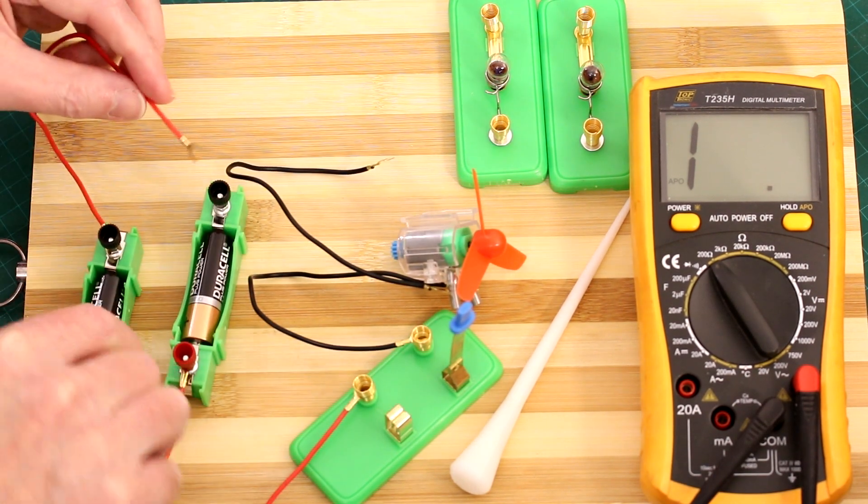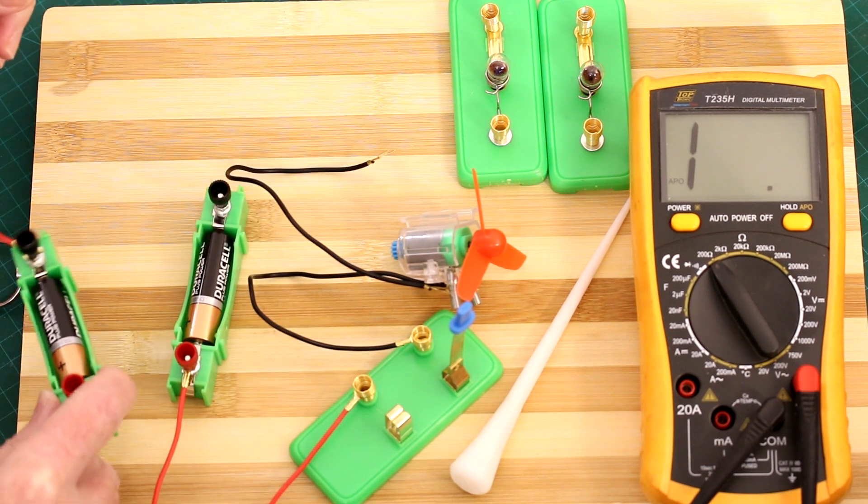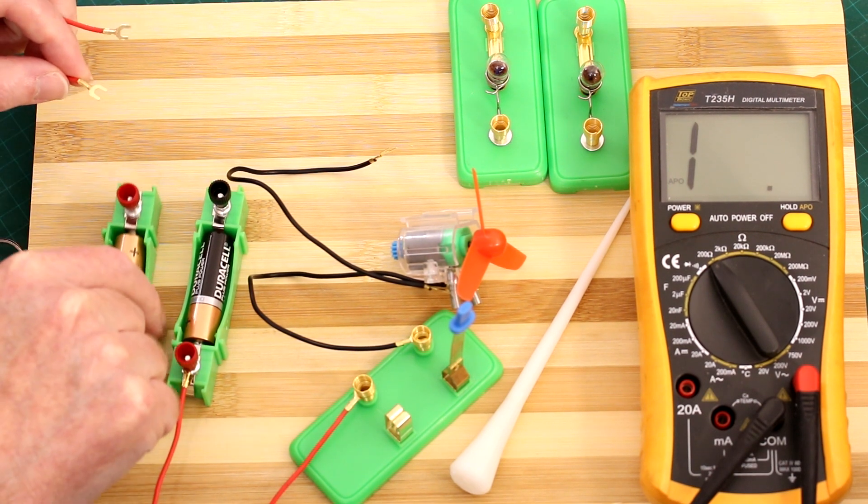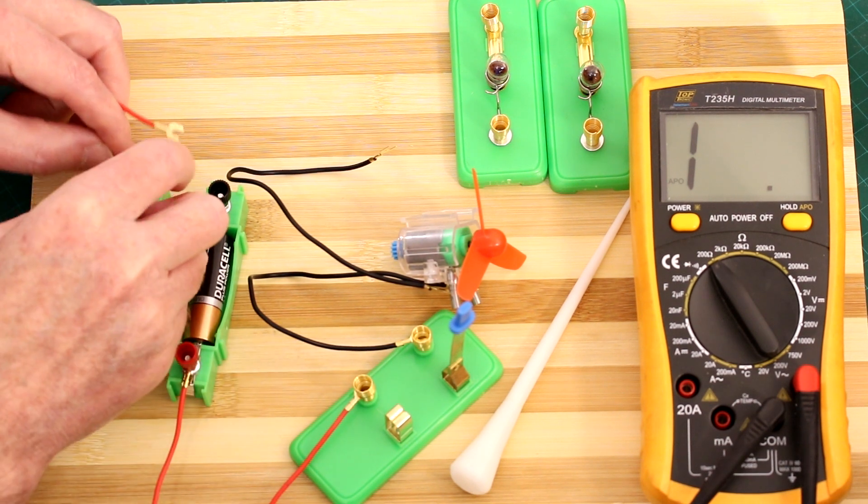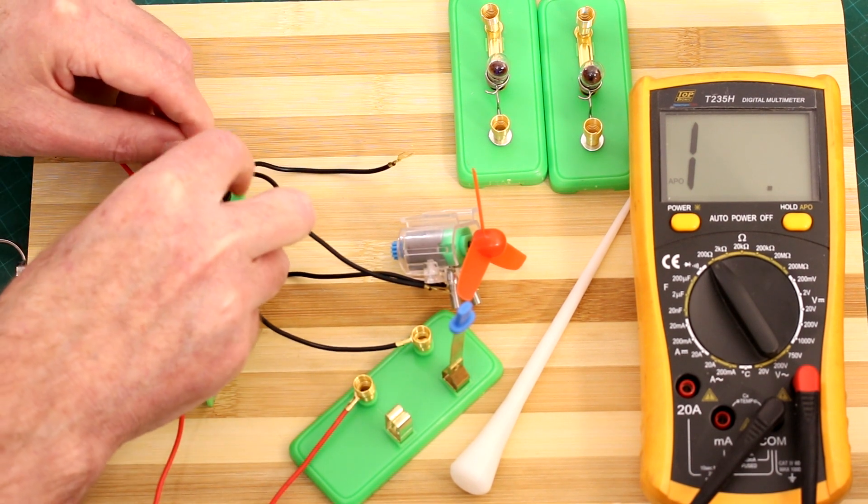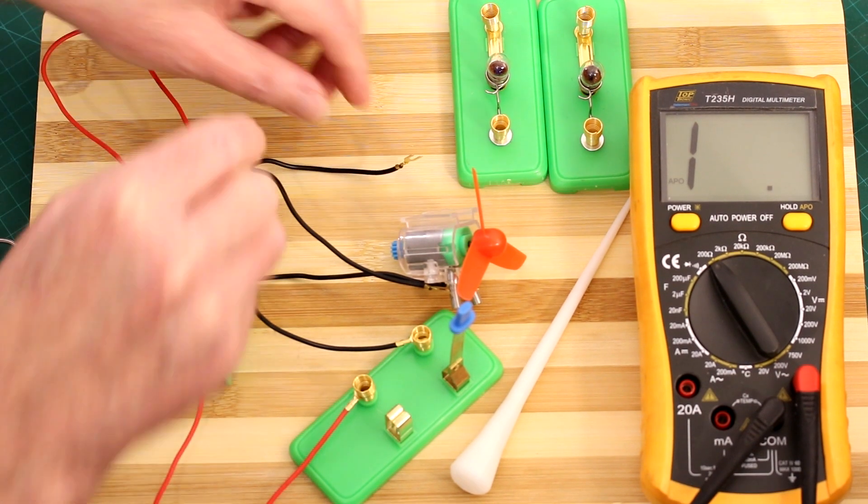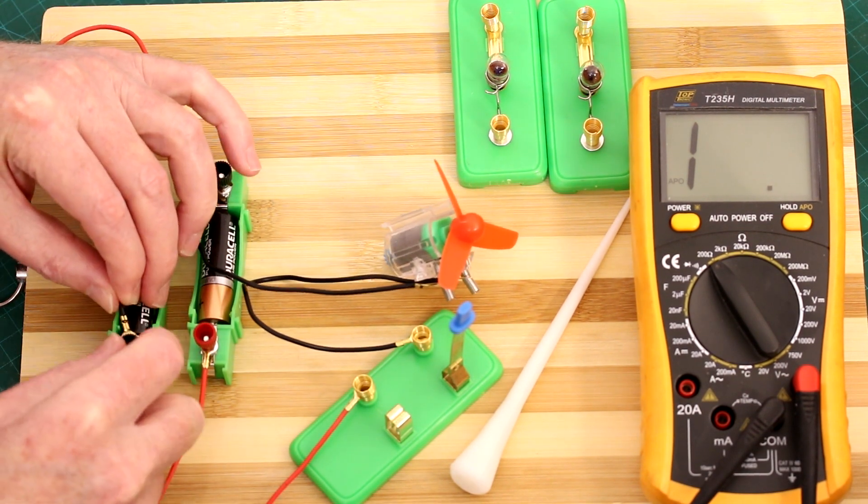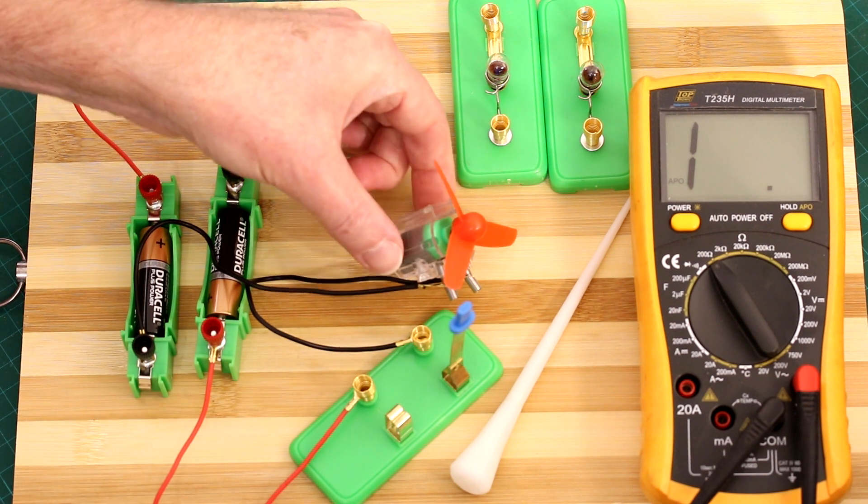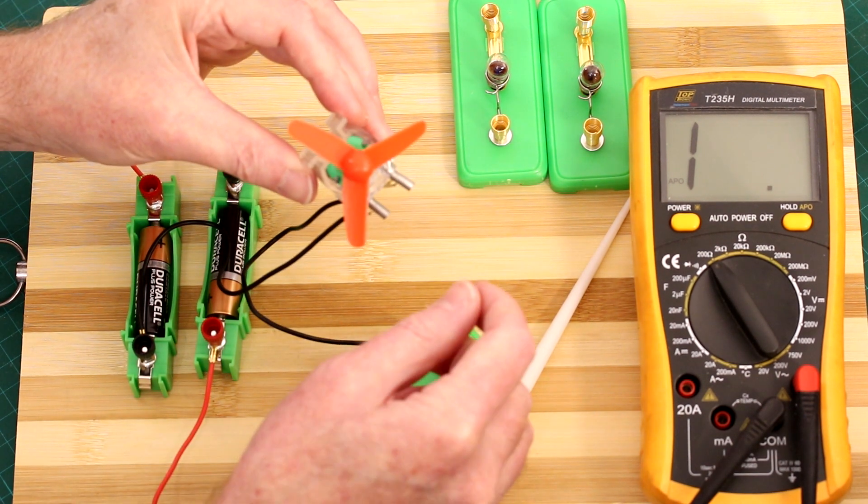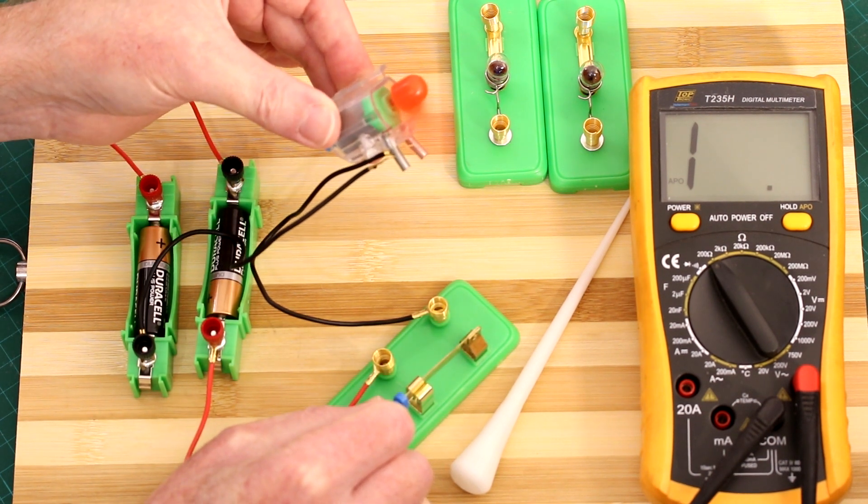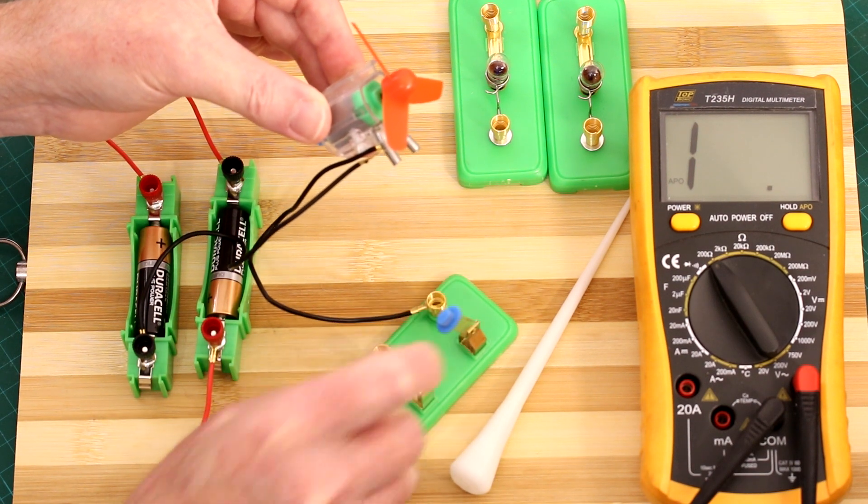Let's see if we can get that fan to spin a bit faster. Now what we want to do is check the polarity, so positive to negative, like that. I'm going to hold the fan. Nice, listen to that go. Spins a lot faster now.